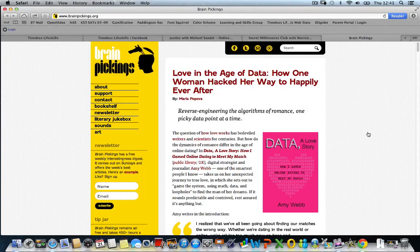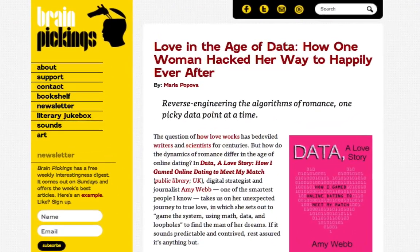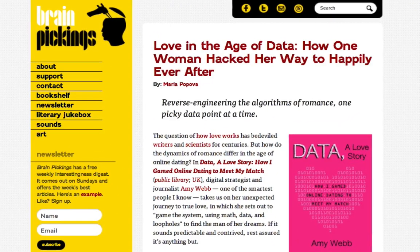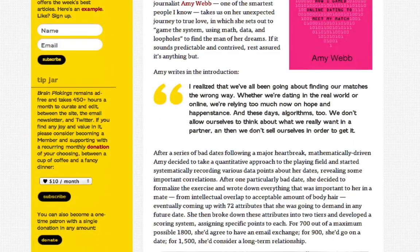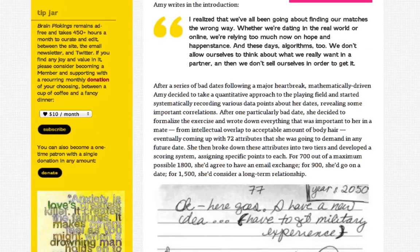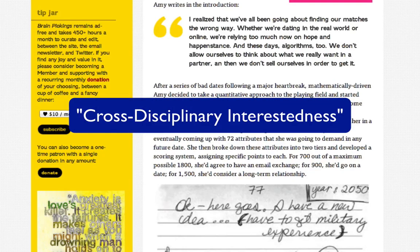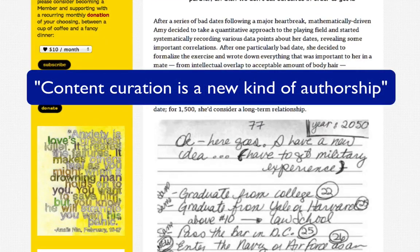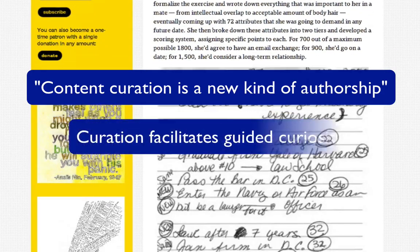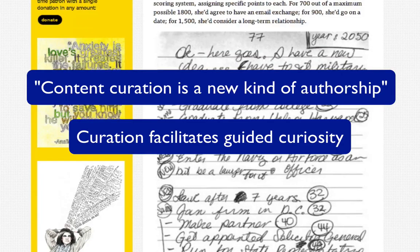One good example of a collection of curated resources is the Brain Pickings website, run by Maria Popova, who has become quite a famous curator. In her own words, she curates cross-disciplinary interestedness. According to Maria, in a world of informational abundance, content curation is a new kind of authorship. Curation facilitates guided curiosity.